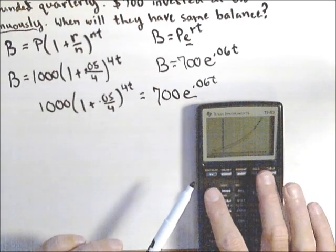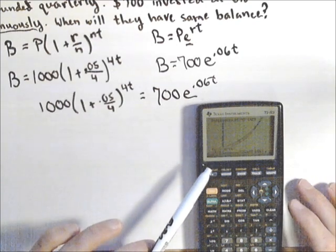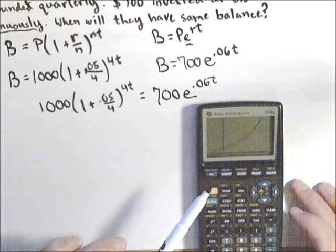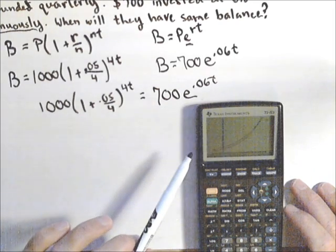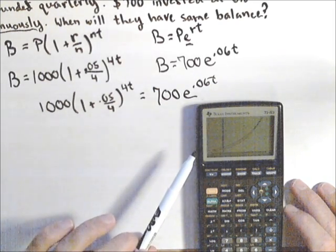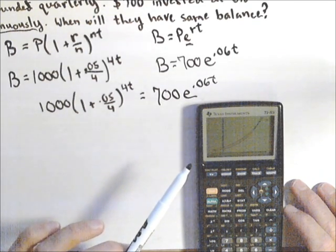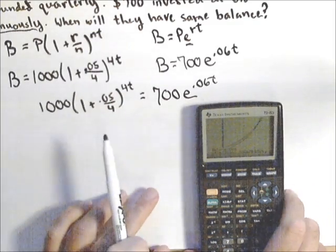So now I'm ready to calculate. I'm going to do 2nd, calculate, intersect is number 5. If you only have two curves and one intersection point, all you have to do is hit enter three times. It's taking a second because I wasn't very close to the intersection point. The closer you are to the intersection point, the quicker it's going to calculate it. So I gave my calculator a little bit of work to do, but I got my answer.